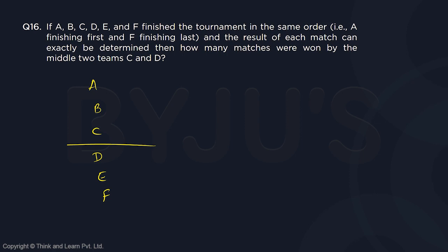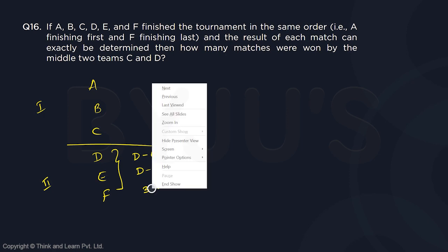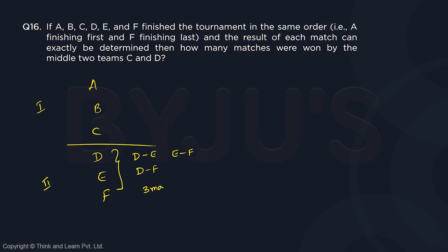How many matches were won by the middle two teams C and D? First let us understand the underlying concept. If you look at group 1 and group 2, how many points can there be with all three teams in group 2? D will play matches with E, D will play with F, and E will play with F. So totally in group 2 there are three matches among themselves, giving three winners — so group 2 will definitely have three points.